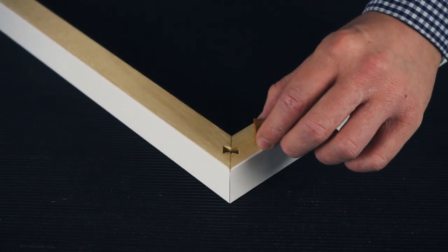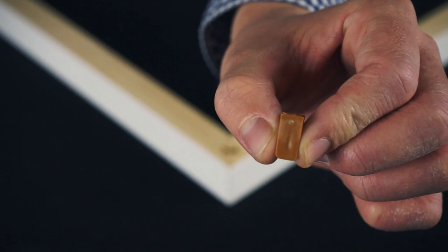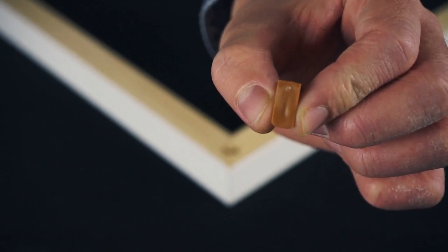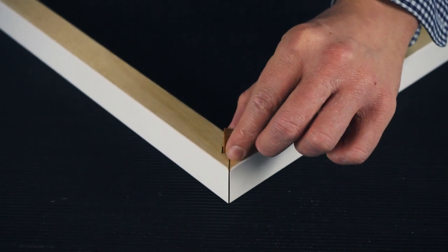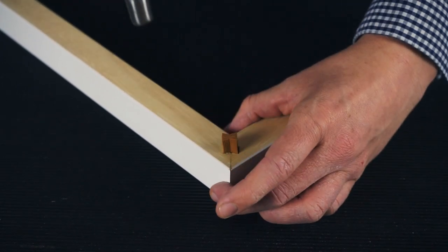Step two, take one of the inserts and with the curved side facing down push it in with your finger. Then use the hammer to tap it in the rest of the way.